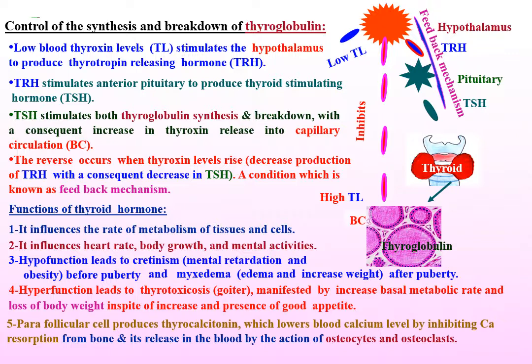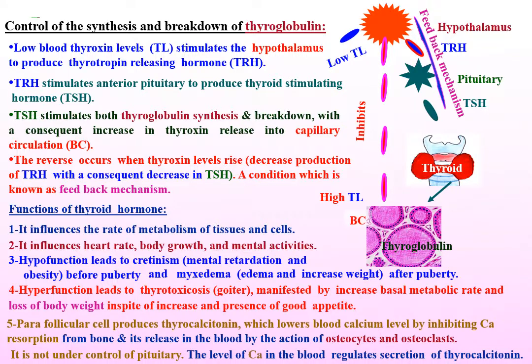Parafollicular cells or C-cells are concerned with the production of thyrocalcitonin, which lowers blood calcium level by inhibiting calcium absorption from bone and its release in the blood by osteocytes and osteoclasts. It is not under the control of the pituitary, but the level of calcium in the blood regulates the secretion of thyrocalcitonin by the parafollicular cells.